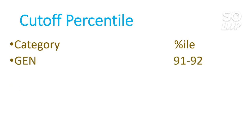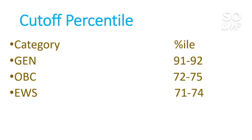For General category, you can expect around 91 to 92 percentile, because last year it was 90-point-something. This year the number of students increased, and while seats also increased, the seat increment is not as large as the student increase. So the cutoff will rise by one or two percentile. For General it is 91 to 92 percentile, for OBC it is 72 to 75 percentile, and for EWS it is around 71 to 74 percentile.